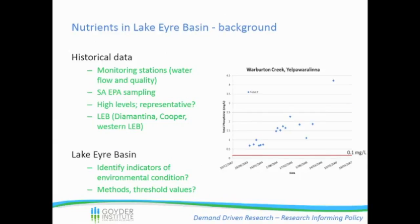As Melissa was saying, we fit into looking at environmental indicators of environmental condition. We're looking at nutrients based on some historical data that we've found, which is pretty sporadic, as well as some SA-EPA monitoring programs. For example, you can see in this plot of total phosphorus levels in the Warburton River in South Australia - these values are way above the red line, which represents the Australian-New Zealand water quality guidelines for total phosphorus. It's consistently quite high, and we wanted to see whether these levels could be found throughout the basin, and whether they're representative, or whether they represent a potentially disturbed ecosystem.